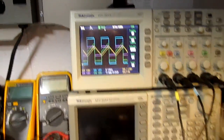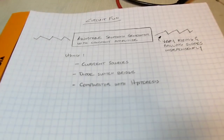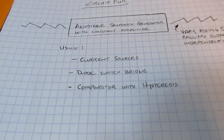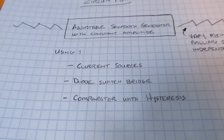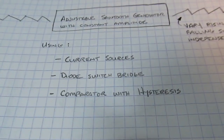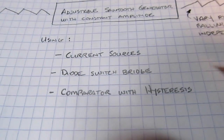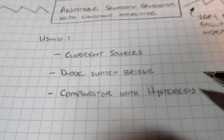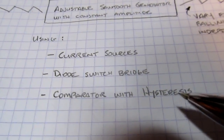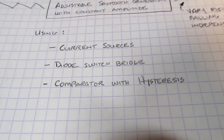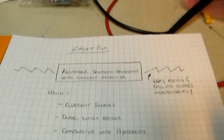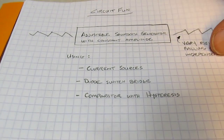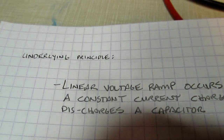I built it up on the bench and we'll take a look at some waveforms in a moment. There are some interesting sub-circuits that are part of this circuit, which I thought would make a nice tutorial. We use some current sources, diodes in a bridge configuration as a switch, and a comparator with hysteresis. We'll talk about all of that and how it all goes together, starting with a little bit of theory.